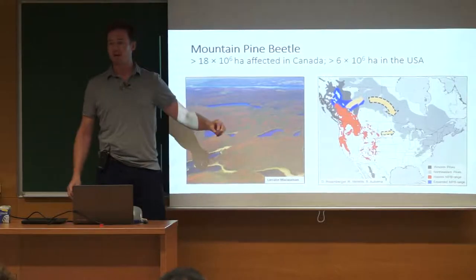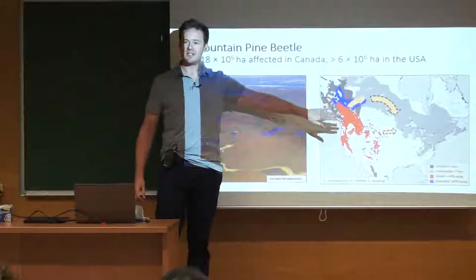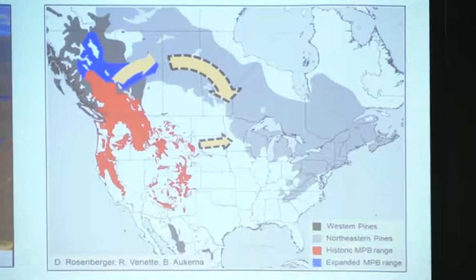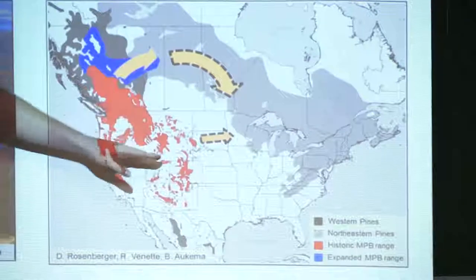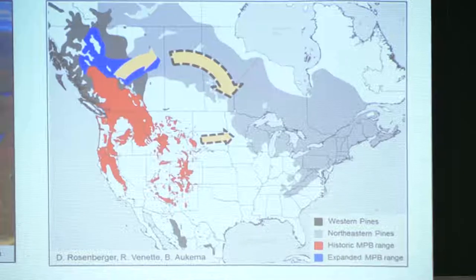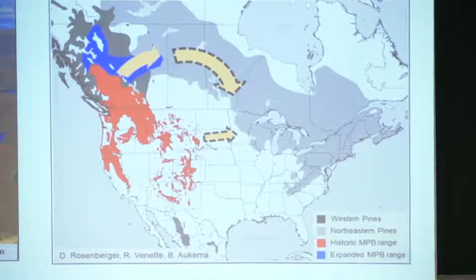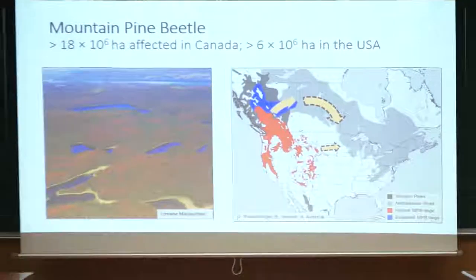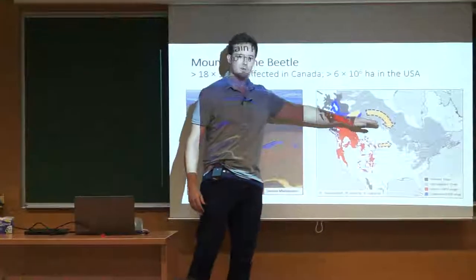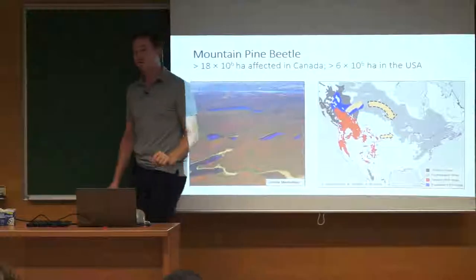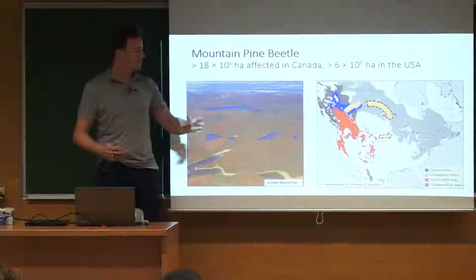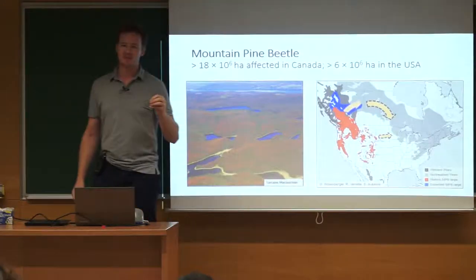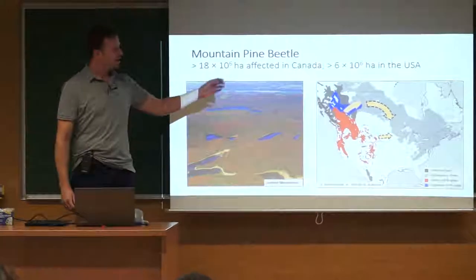It's a big problem right now because it's expanding its range and threatening forest regions not previously threatened. The red shows the historic mountain pine beetle range; the blue is the novel extended range. Over the last decade, it has attacked lodgepole pine forests in Alberta and British Columbia where there's no prior record. These orange arrows indicate potential migration paths into jack pine forest across the Canadian boreal forest, and we've demonstrated the mountain pine beetle is now successfully reproducing in jack pine as well.